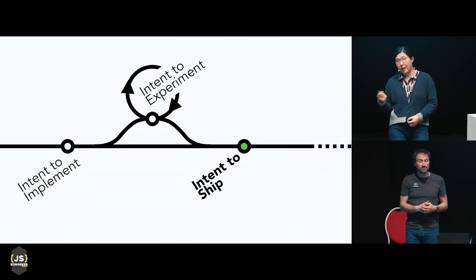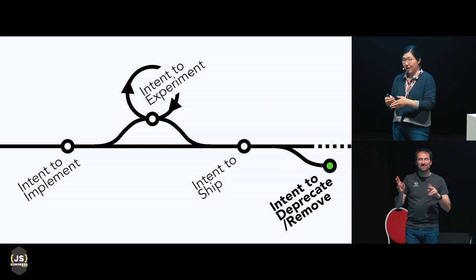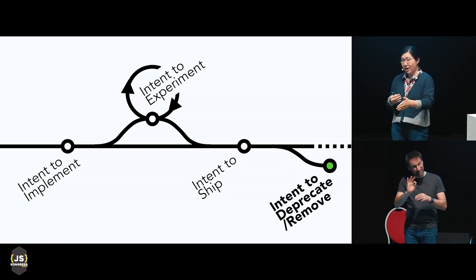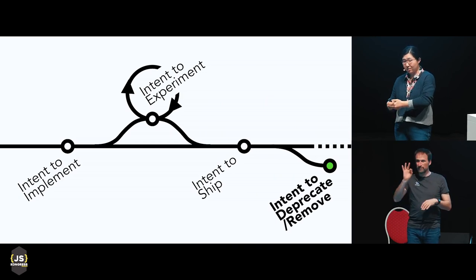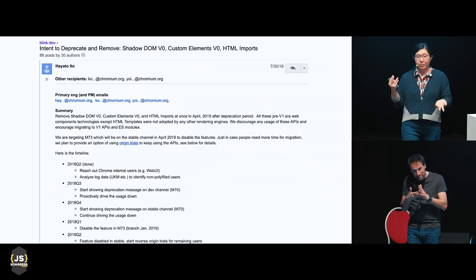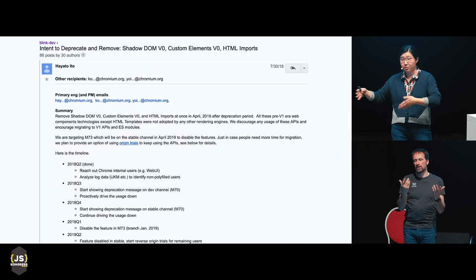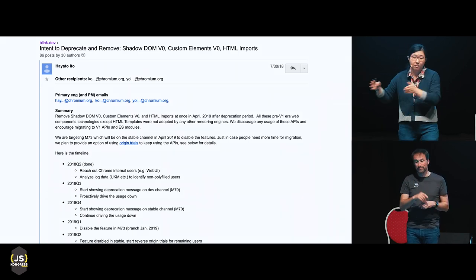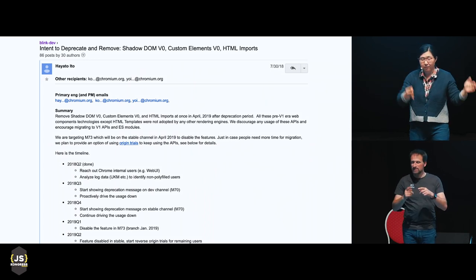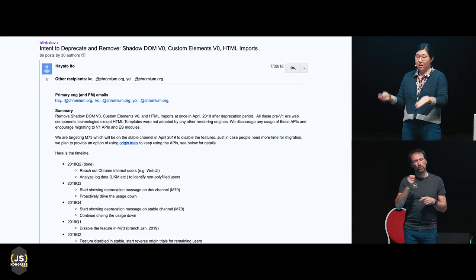There's another kind of checkpoint: intent to deprecate and remove. If a feature doesn't become part of the web platform and becomes a special feature only for Chromium, that's technical debt and needs to get removed. A recent example is the Web Components V0 specs — Shadow DOM V0 and Custom Elements V0. The Custom Elements and Web Components specification that's shipping is vastly different from V1, so V0 that existed in Chromium needs to be removed, hence an email about intent to deprecate and remove detailing the timeline and process.